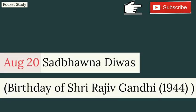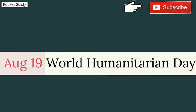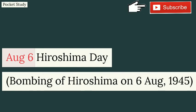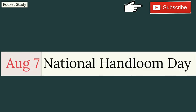June 5th: World Environment Day. August 20th: Sadbhavana Divas. August 19th: World Humanitarian Day. August 6th: Hiroshima Day, commemorating the bombing of Hiroshima in August 1945.